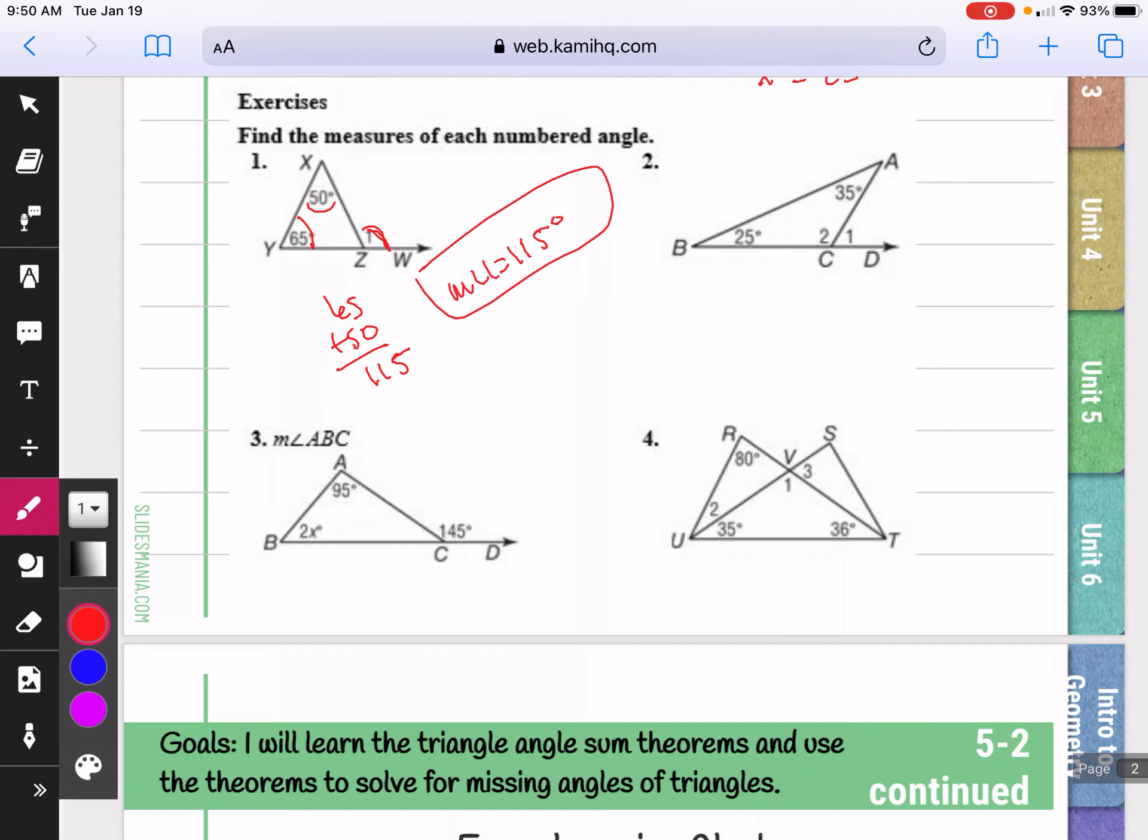In the next picture, we can add these two angles to get angle one. So 25 plus 35 would be 60. So angle one is 60 degrees.